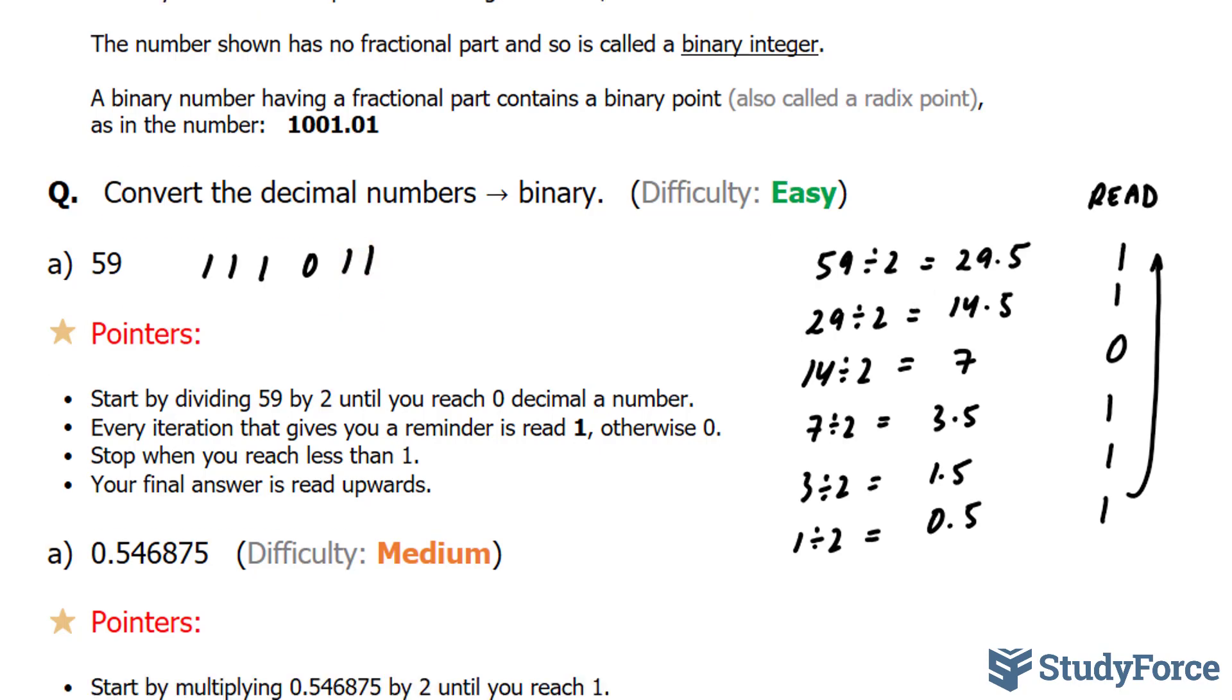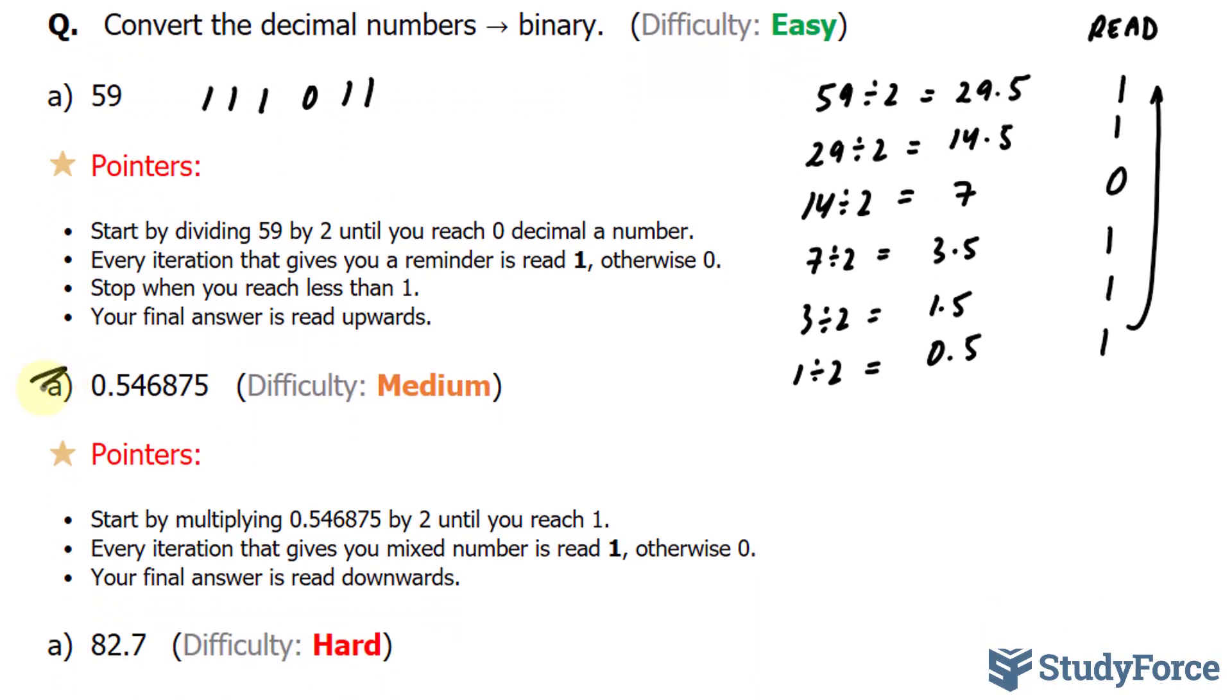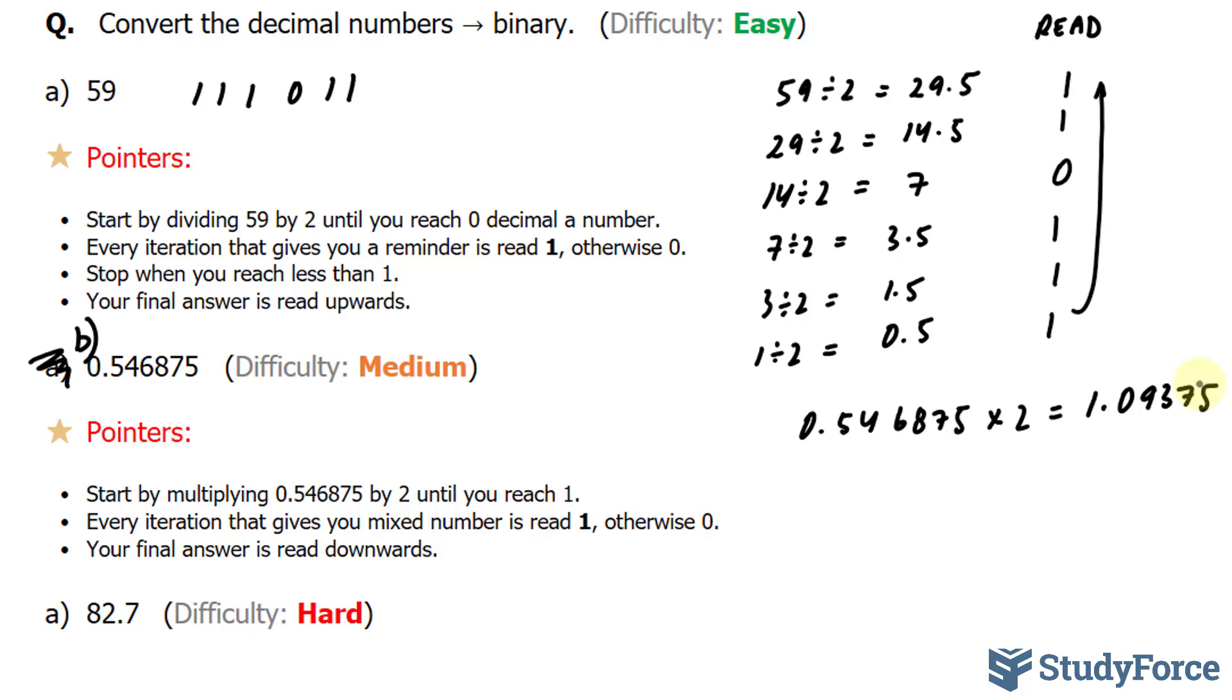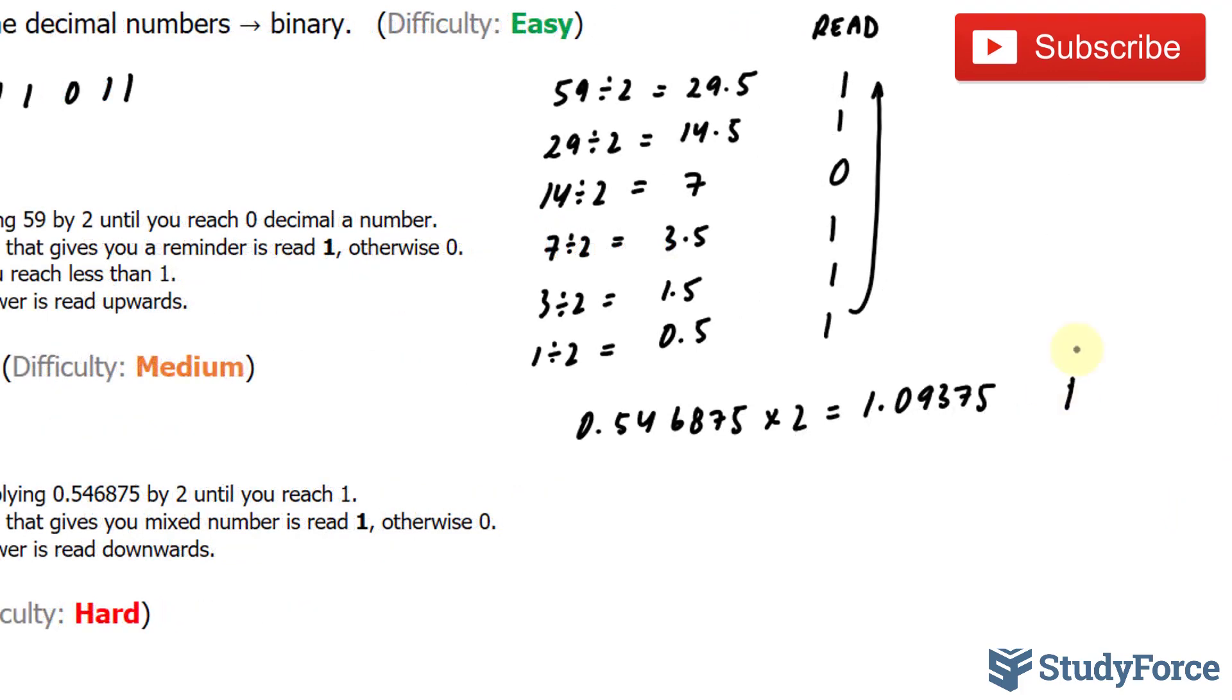Let's move on to the next question. The next question is considered to be slightly harder, and it should read b, not a. So this time we need to convert 0.546875, and this is a decimal number to binary. What you do in this situation, notice that our decimal number is less than 1. Instead of doing this division, we actually have to multiply by 2 each time. So let's start off by multiplying 546875 by 2. If I multiply this number by 2, I end up with 1.09375. Now, since we get a mixed number, we have to read this as 1.